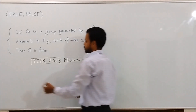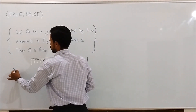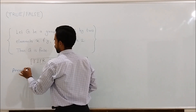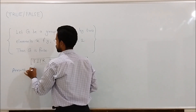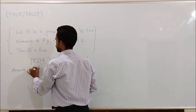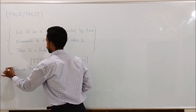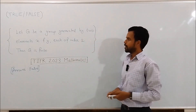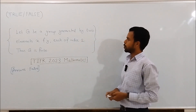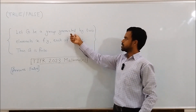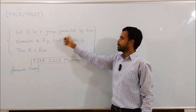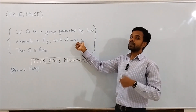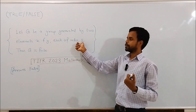The answer of this question is false — that is, this given statement is false. To show this, we will construct a group G generated by two elements x and y, each of order 2, but G is an infinite group.